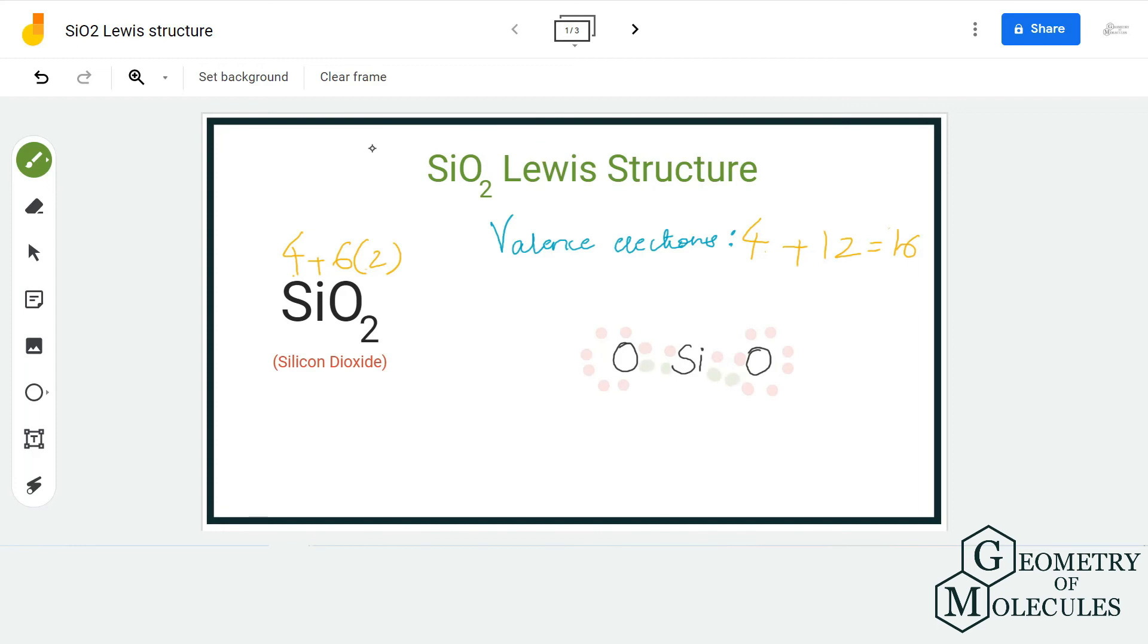and silicon atoms, which will help silicon achieve a complete octet. Now silicon has a complete octet and both oxygen atoms also have complete octets. Hence this is the Lewis structure of SiO2, in which the silicon atom forms two double bonds with two oxygen atoms.